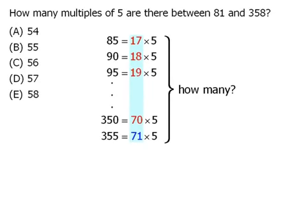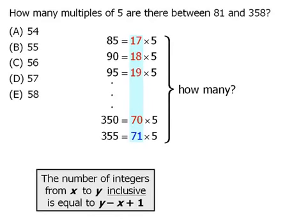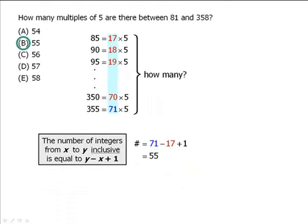We happen to have a nice formula for this. And when we apply it, we get 71 minus 17 plus 1, which is equal to 55, which is equal to b.